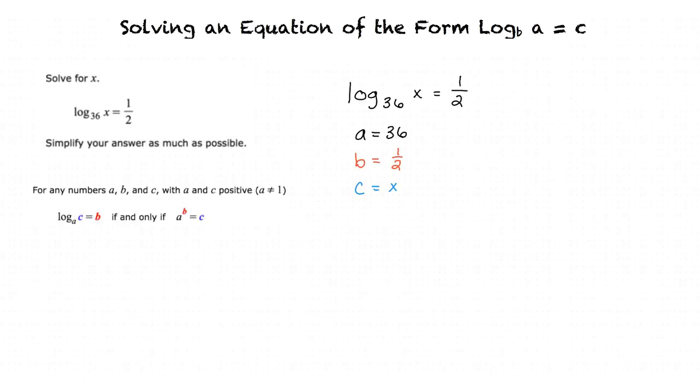When rewritten in a to the power of b is equal to c form, this results in the equation 36 raised to the 1 half power is equal to x. This can be further simplified to result in our final answer of x is equal to 6.